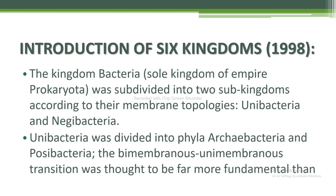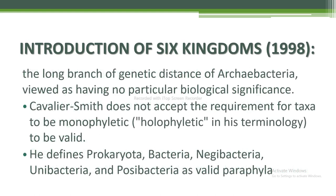The kingdom Bacteria, the sole kingdom of empire Prokaryota, was subdivided into two sub-kingdoms according to their membrane topologies: Unibacteria and Negibacteria. Unibacteria was divided into phyla Archaebacteria and Posibacteria. The bimembranous and unimembranous transition was thought to be far more fundamental than the long branch of genetic distance of Archaebacteria, viewed as having no particular biological significance.